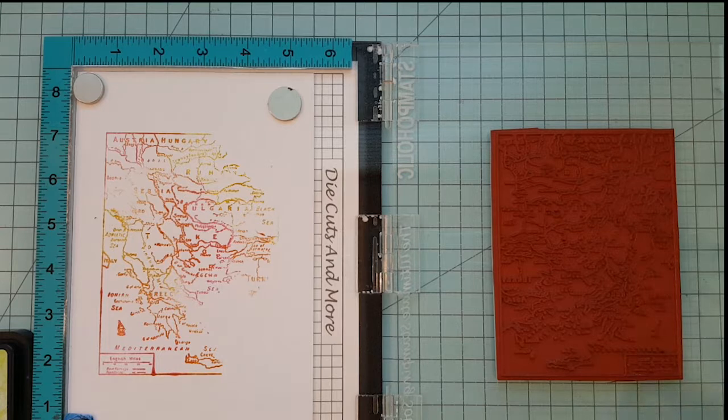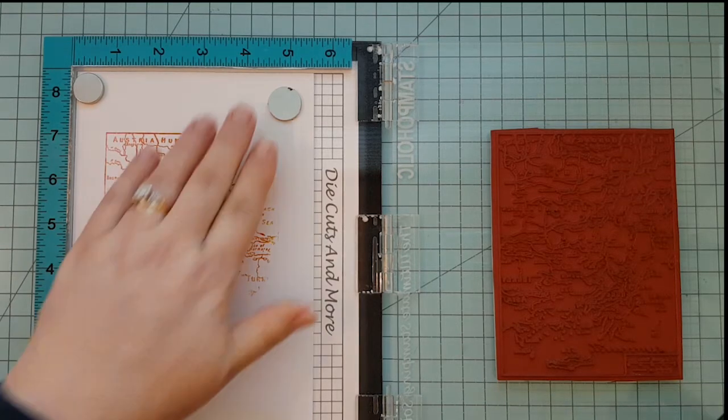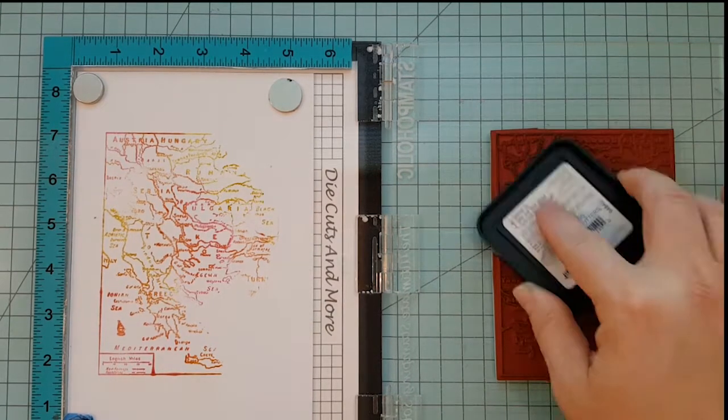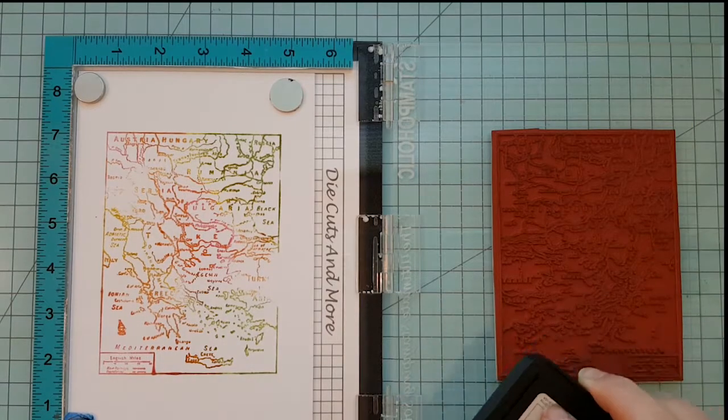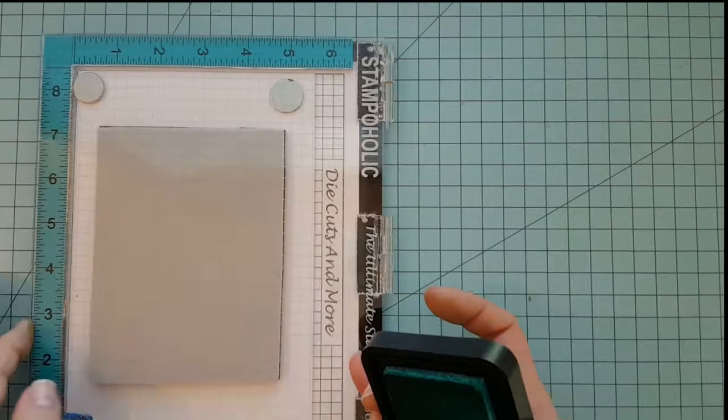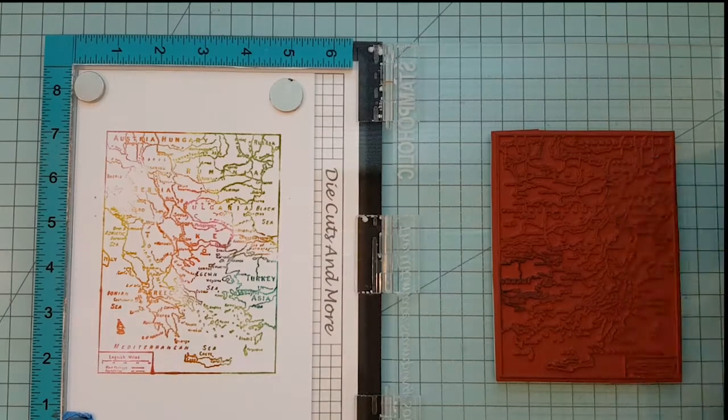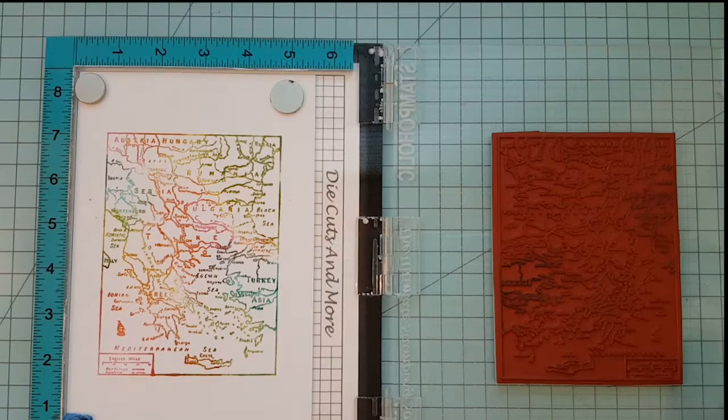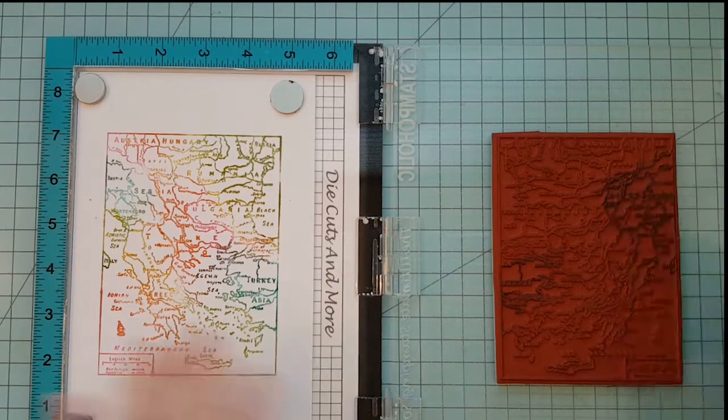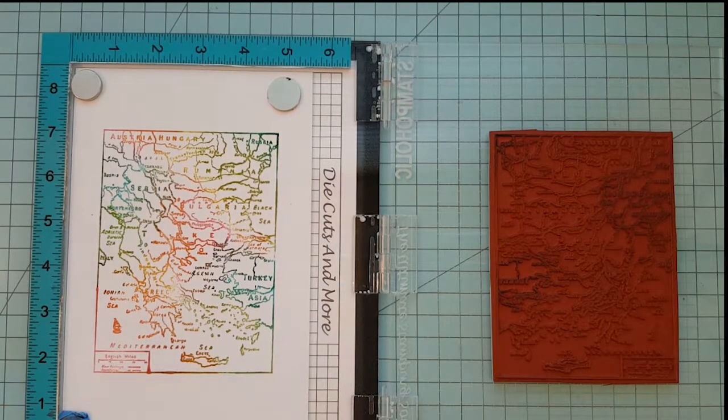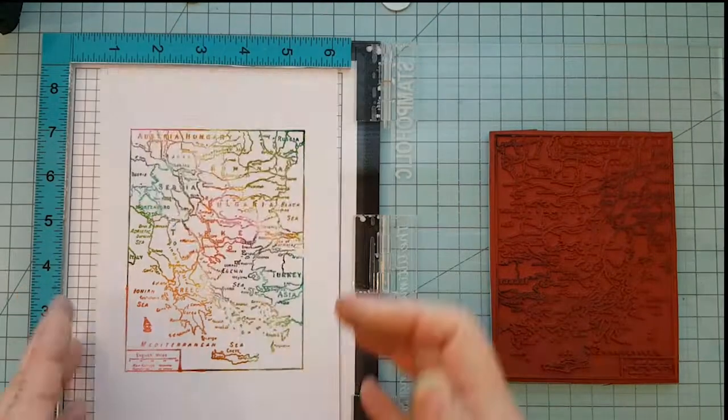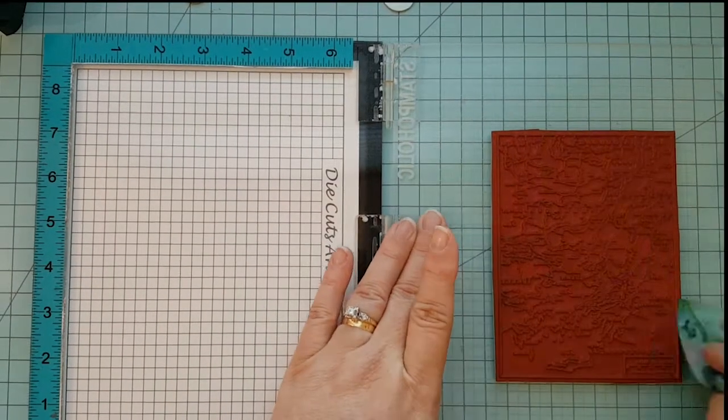Now, the smaller, the mini cubes, they work great for this technique if you're using a big stamp. And you really do need a big stamp for this. So I just continued from the worn lipstick onto the spice marmalade to the mustard seed, the shabby shutters, and then the peacock feathers. And I worked with that same idea in mind, red, orange, yellow, green, blue.